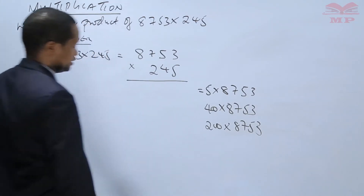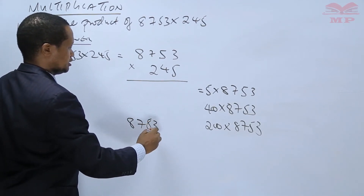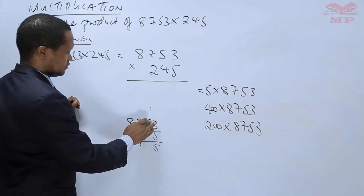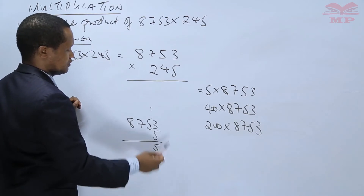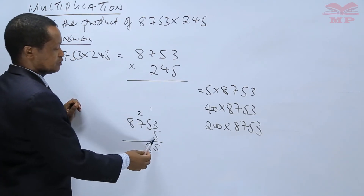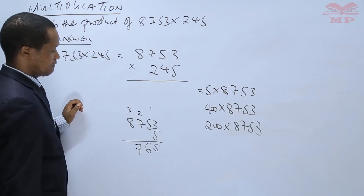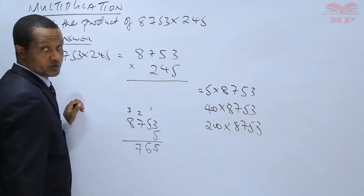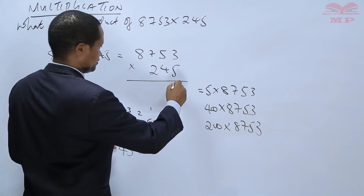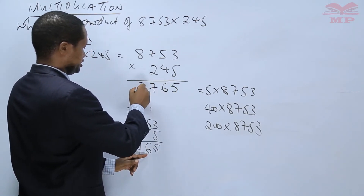Starting with 8,753 times 5: 3 times 5 is 15, write 5, carry 1. 5 times 5 is 25 plus 1, which is 26, write 6, carry 2. 7 times 5 is 35 plus 2, which is 37, write 7, carry 3. 8 times 5 is 40 plus 3, which is 43. So we write: 5 in place value of 1, 6 in place value of 10, then 7, then 3, then 4.